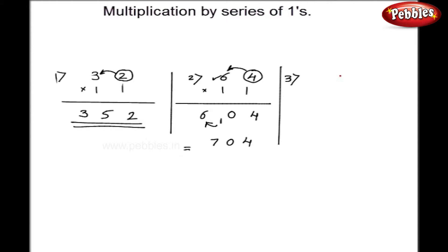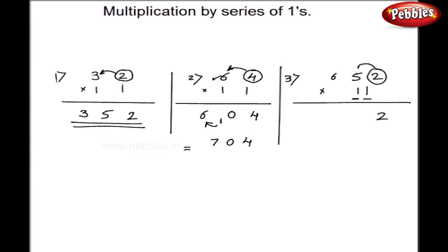Now let me show you one more example, a slightly bigger one. I will take the 3-digit number 652 multiplied by 11. The steps are exactly the same. First I will take the last two digits as they are. Remember, I have only 2 digits in my multiplier, so I can add a maximum of 2 digits at a time. Now I will add 5 plus 2, that is 7. For the next step, I add 5 plus 6, that is 11 — writing it with the carry over. Only 6 is remaining, so I write it as is. My final answer is 7172 in just one step.